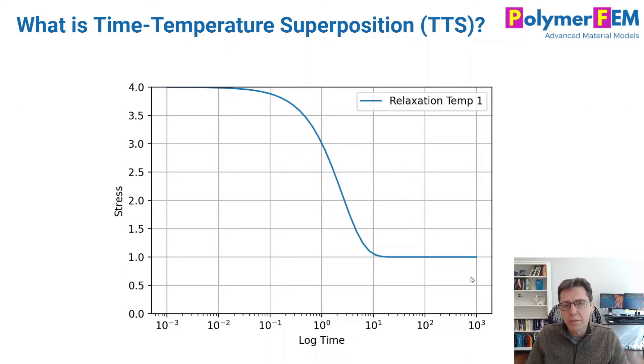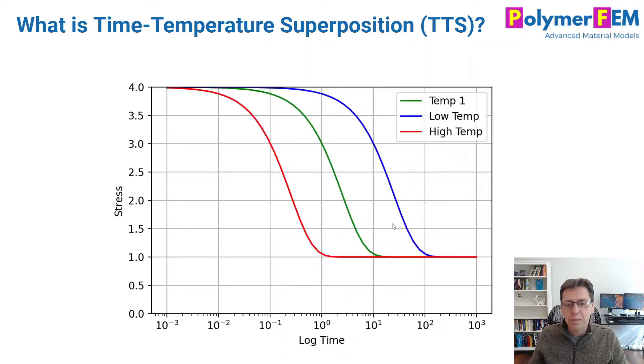So that's all good, but what if you do this test again at a different temperature, for example a higher temperature or a lower temperature as you can see here. And in some cases when you do these additional experiments at different temperatures, you get the same exact curve except that it's shifted left and right.